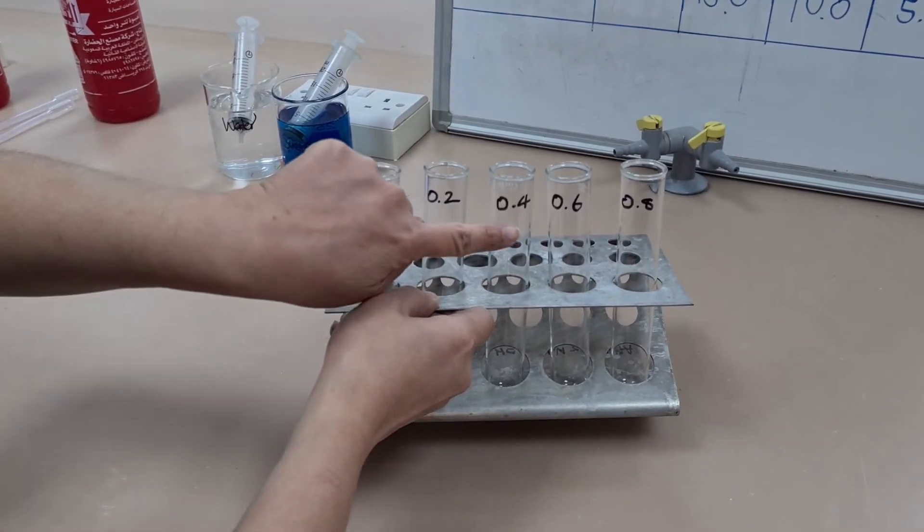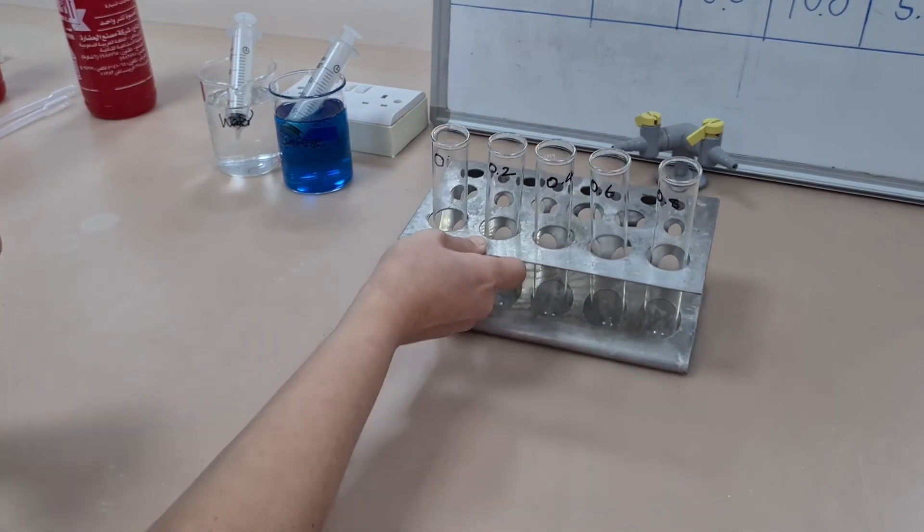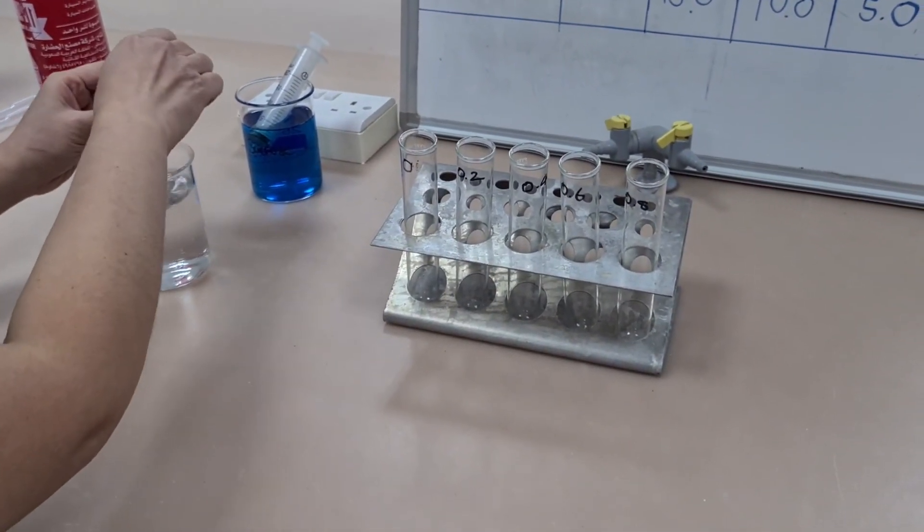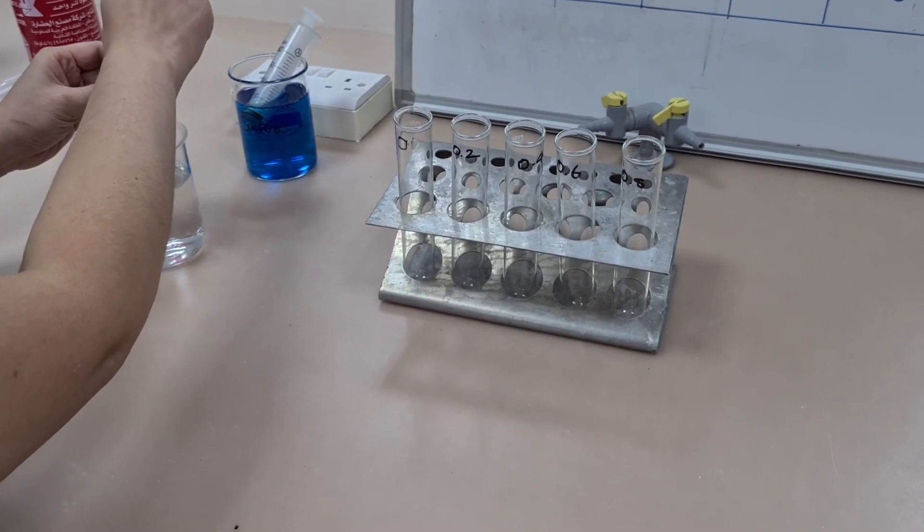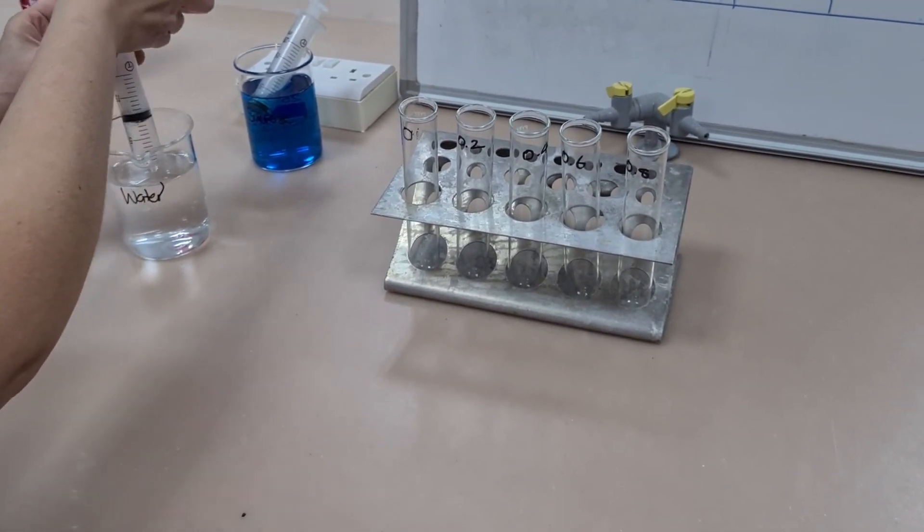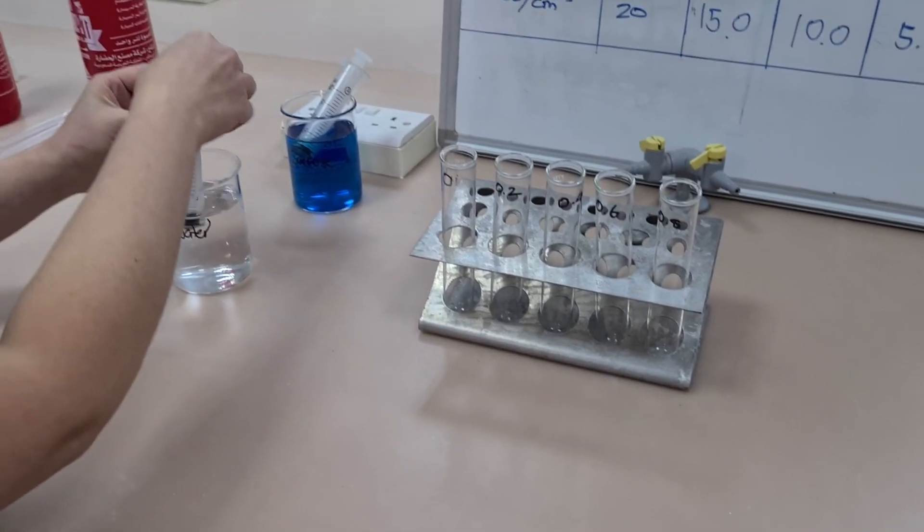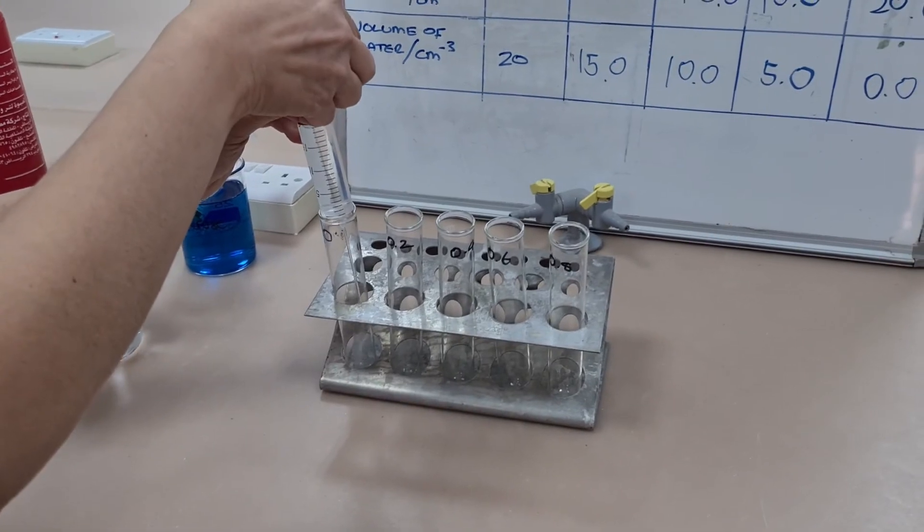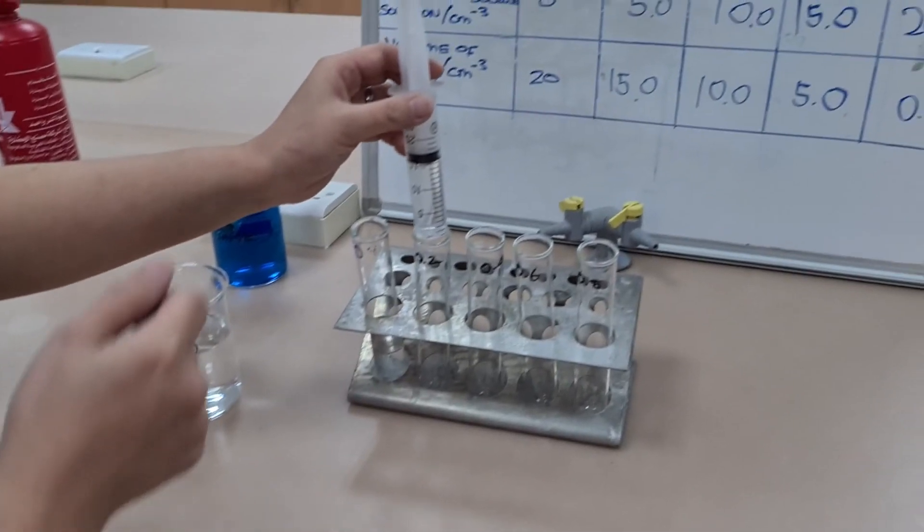Ensure you have labelled each of the boiling tubes with the dilution that you want to make with a permanent marker pen. Using a syringe, fill all your boiling tubes with the desired amount of water. Fill all the tubes with water first before you move to your stock solution.